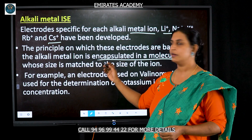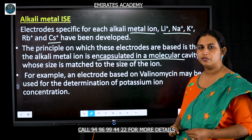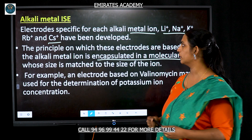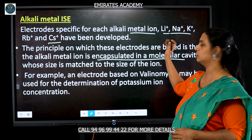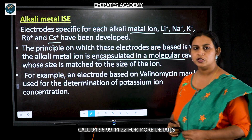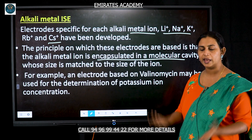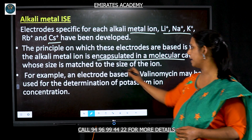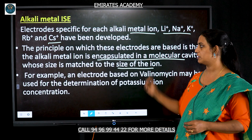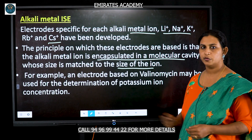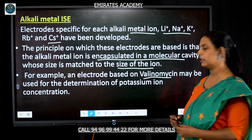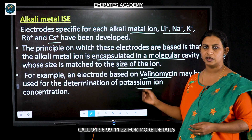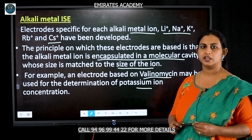Next we have the alkali metal ion selective electrode. This type of electrode is specifically made for metal ions — it is specific for each alkali metal such as lithium, sodium, potassium, cesium, etc. It is based on the principle of encapsulating the metal ion in a molecular cavity, where the size of that molecular cavity is matched to the size of the ion. That is the principle behind alkali metal ISEs. For example, a valinomycin-based electrode is used for the determination of potassium ion concentration.